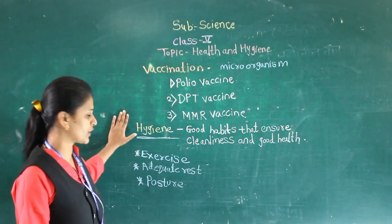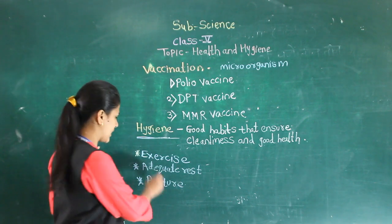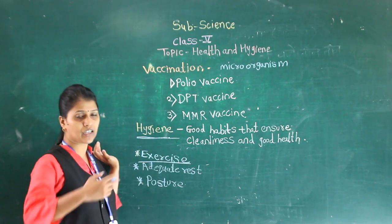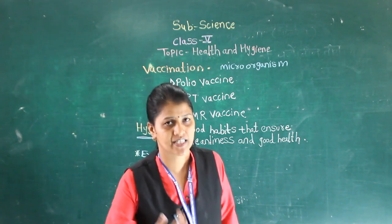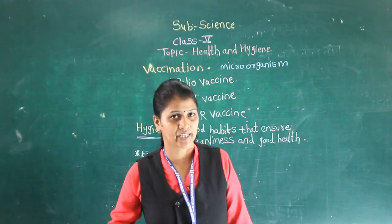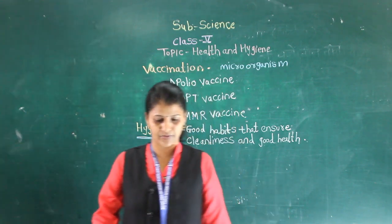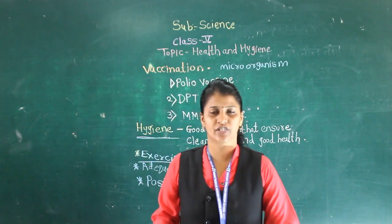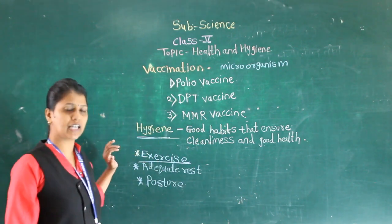Along with this, we should also do exercise regularly. Why should we do exercise regularly? It improves our blood circulation and maintains our digestive system properly — it helps the digestive system work correctly. When we exercise, more oxygen is supplied to the brain.